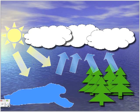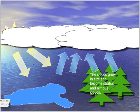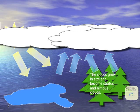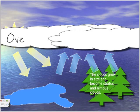You can see that as the plants and water keep on transpiring, the clouds will eventually grow in size and become stratus and nimbus clouds. Usually when this happens, it's a condition called overcast. This is usually what happens when this sort of thing happens.